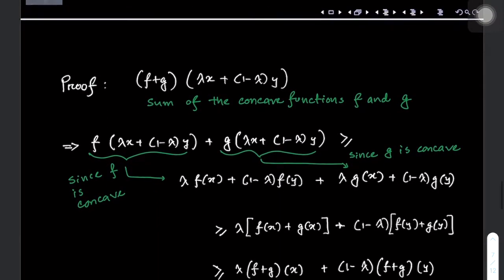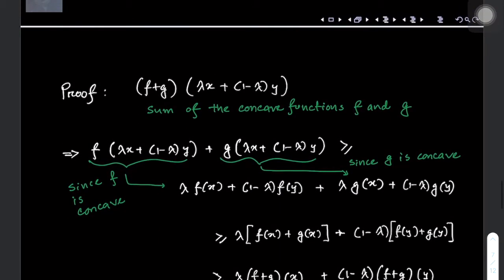So let's take a look at the simple proof of this property. We start from the left hand side, which is f plus g evaluated at lambda*x plus (1 minus lambda)*y. This represents the sum of the two concave functions f and g — we are evaluating f at this point and g at this point and then adding them up. So we can write this as f evaluated at lambda*x plus (1 minus lambda)*y plus g evaluated at lambda*x plus (1 minus lambda)*y.